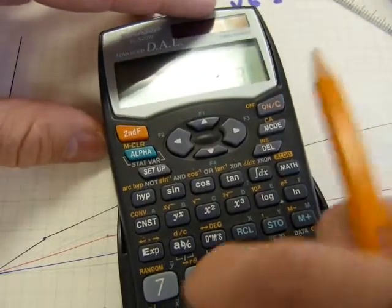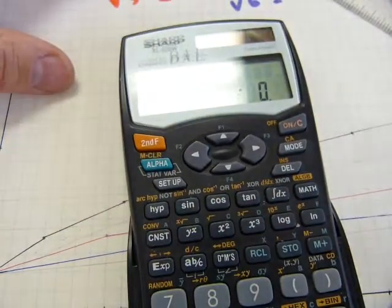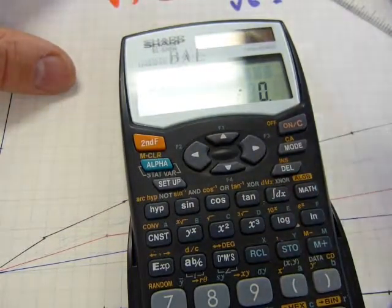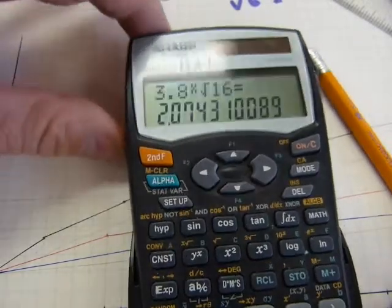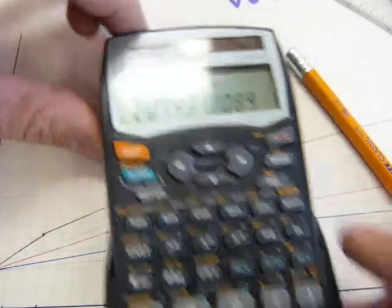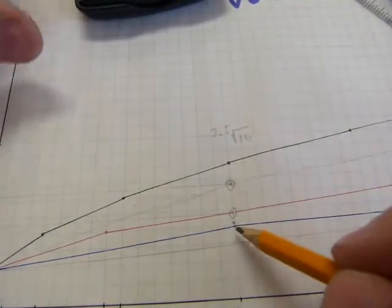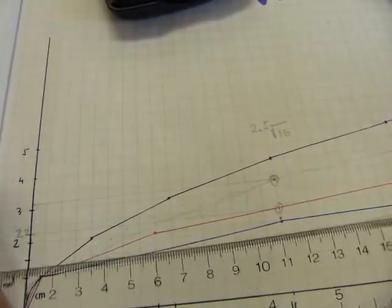So, 3.8, root sign, and 16, and we've got that number, 2.07, which is pretty close to what we see on the graph there.